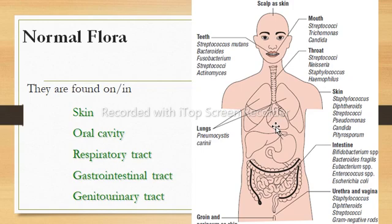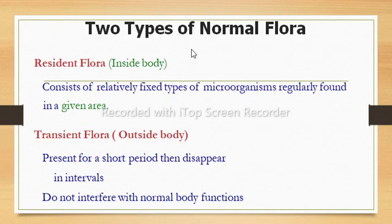The human normal flora is a mixture of microorganisms including bacteria, fungi, protozoa, and acellular agents like viruses. They are regularly found at any site of the human body such as skin, respiratory system, GIT, or urinogenital tract. Under normal conditions, the human microbiota are harmless and may even be beneficial. There are two types of normal flora: resident normal flora and transient normal flora.